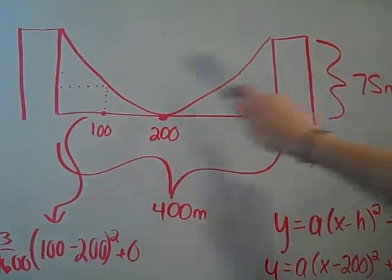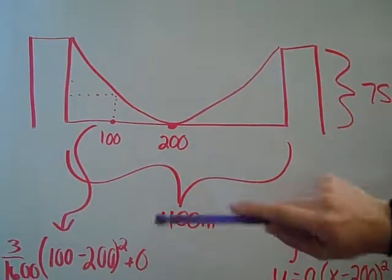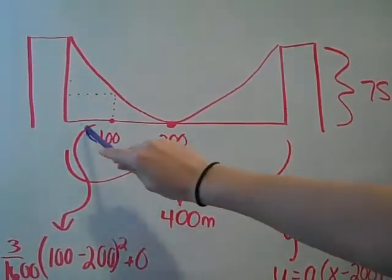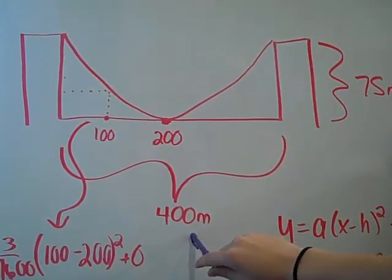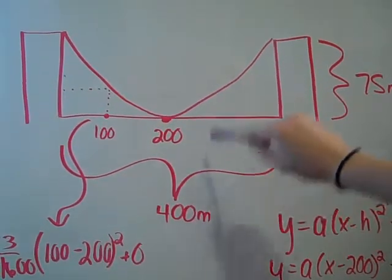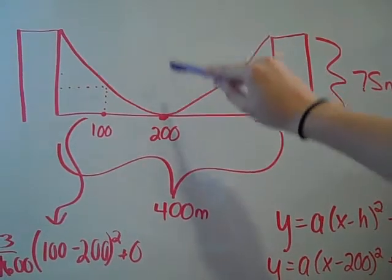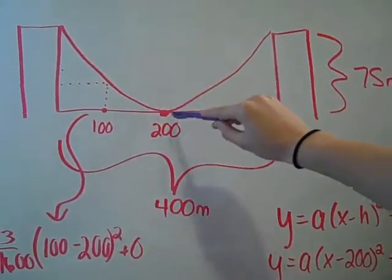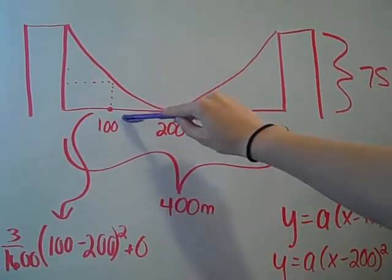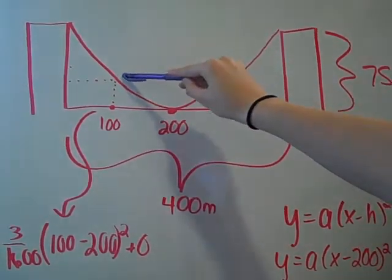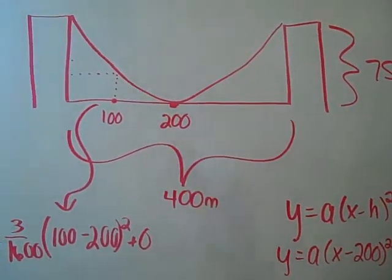We drew a picture. These are the twin towers and they're each 75 meters tall. In between is the bridge which is a total of 400 meters between the towers. We found that our vertex, which is where the cable touches the ground, was at 200 meters. We're looking for the height at 100 meters on the bridge and how tall the cable is.